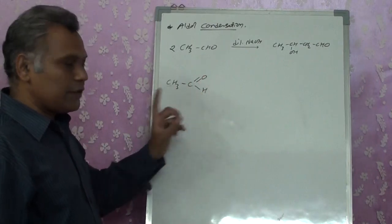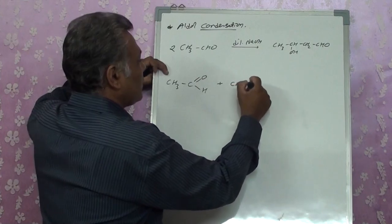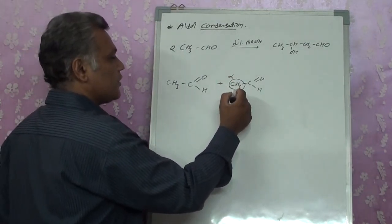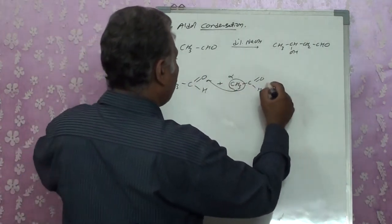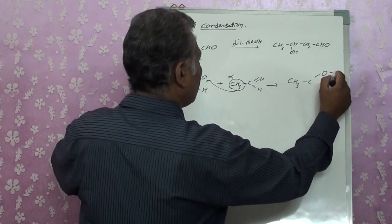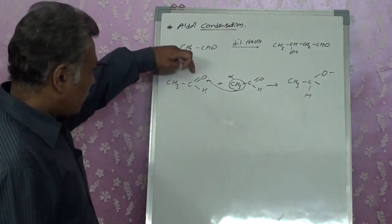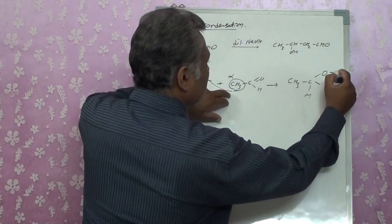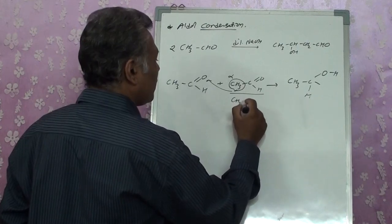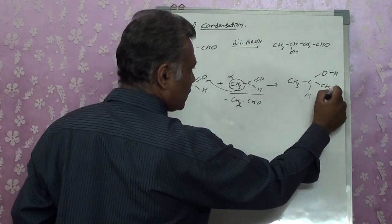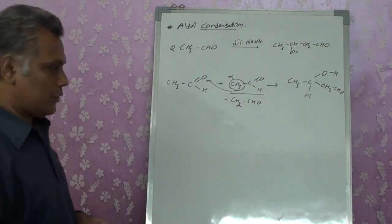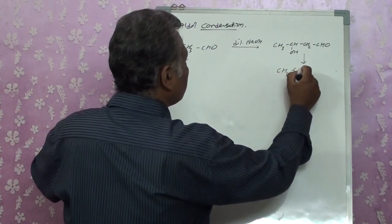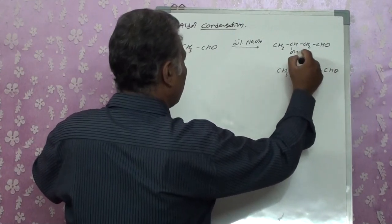We have one mole of CH3CHO and another mole of CH3CHO — it is an alpha hydrogen containing compound. It loses one hydrogen to the oxygen, and the compound gets converted: the C=O becomes C–O⁻ (single bond). The hydrogen from the alpha carbon reacts with the oxygen. The remaining CH2CHO group attaches, producing CH3CH(OH)CH2CHO. But this is unstable; it undergoes beta elimination, losing H2O to give CH3CH=CHCHO, the stable product.